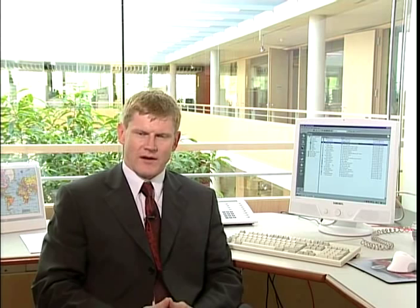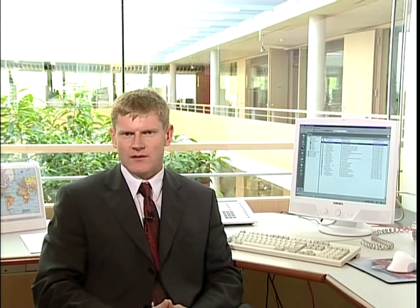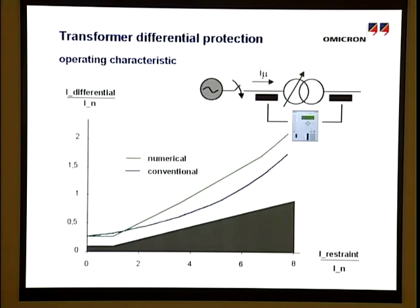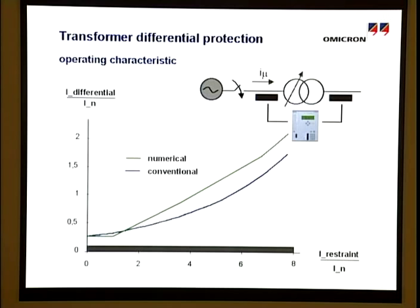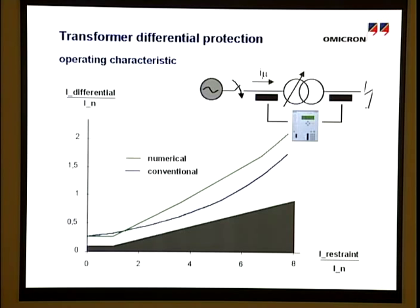Based on an actual event, the following explanation describes the theoretical background and methods for analyzing CT behavior, and explains what has to be considered to set the differential protection system properly. The trip characteristic of a transformer differential protection, defined in the differential restraint area, is mainly determined by differential currents resulting from specific circumstances under normal operation. The magnetizing current and the tap changer are the significant influences within the load area. In case of heavy through faults, the impact of CT saturation is taken into account by increasing the rise of the characteristic.